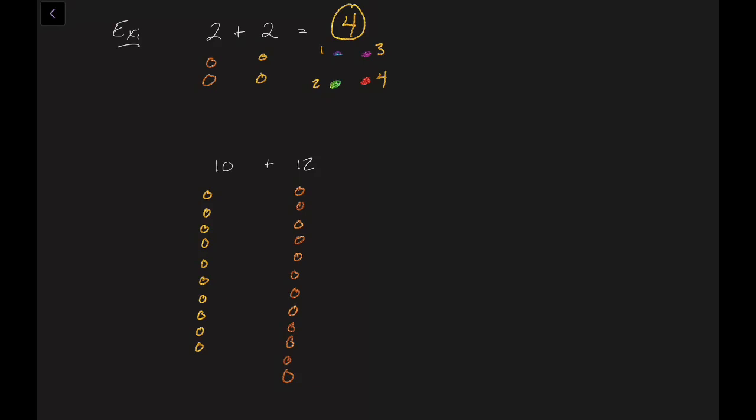And now what we want to do is we can either redraw all the circles, or we can just count it from there. So let's count them. 7, 8, 9, 10. Then we go over to the 12s. So we get 11, 12, 13, 14, 15, 16, 17, 18, 19, 20, 21, and 22. So 10 plus 12 is 22. And we see why we wouldn't want to necessarily use this method, because it's kind of long to draw it all out.